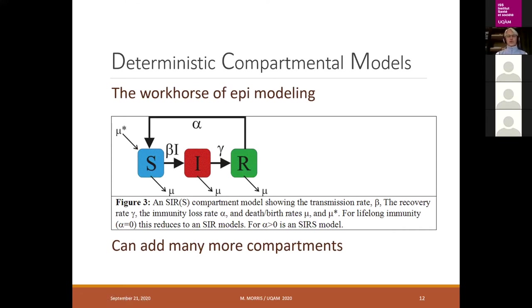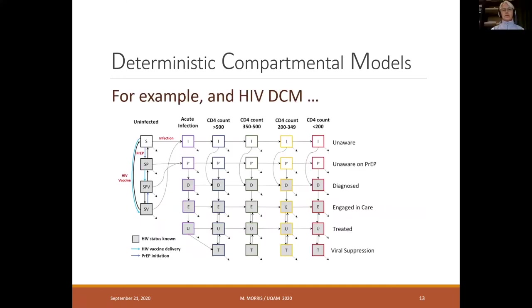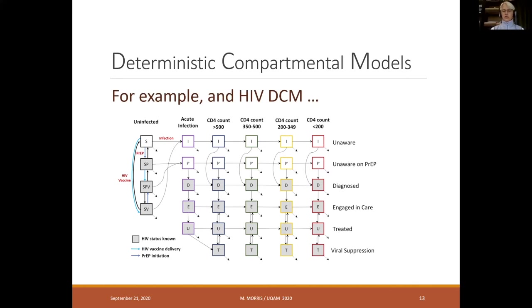These models are traditionally not this simple at the research level — you add many more compartments to reflect population-level heterogeneity. For example, a DCM for HIV divides the population into susceptibles, infecteds unaware of their status, those unaware but on PrEP, those diagnosed, those engaged in care, those treated, and those virally suppressed. This is further broken down by stage of infection — acute infection and levels over time as a function of CD4 count. A traditional research DCM often has hundreds of compartments.